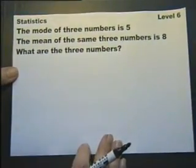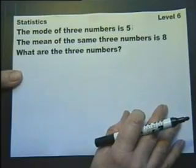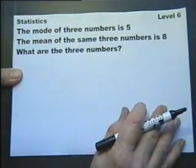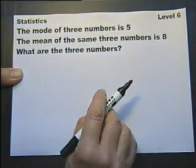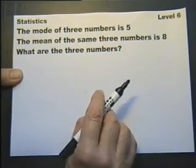Let's kick off with a bit of statistics. The mode of three numbers is 5. The mean of the same three numbers is 8. What are the three numbers?